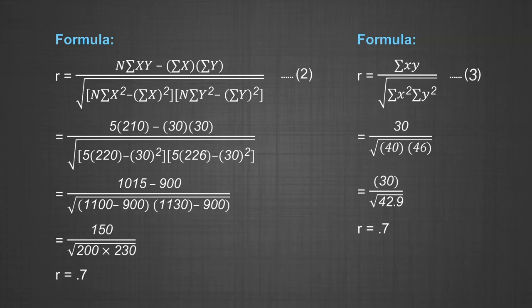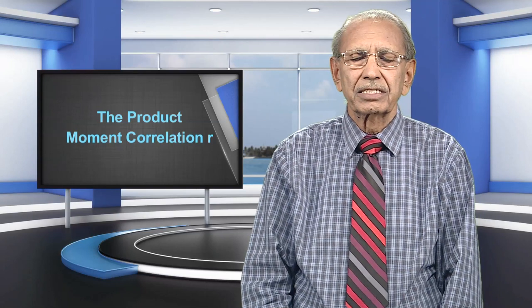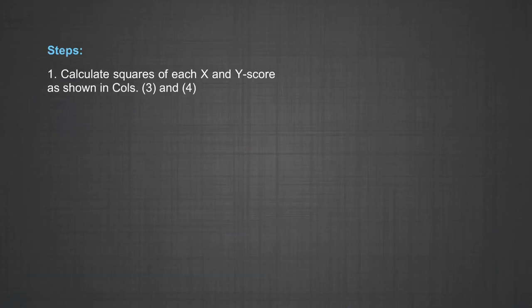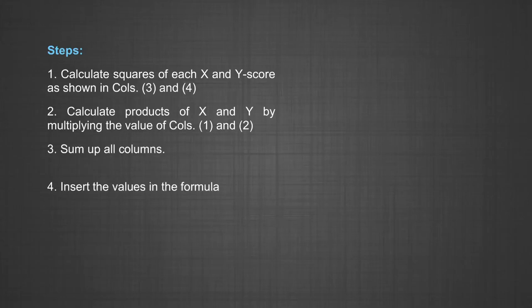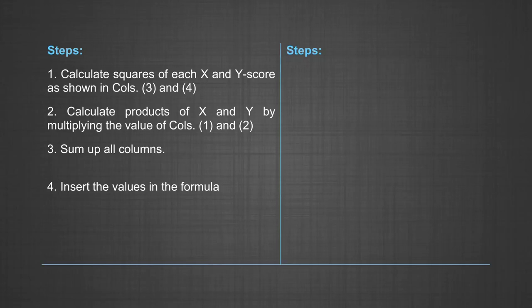We have shown the steps in the calculation of the coefficient of correlation by two different methods. Reviewing the steps for the raw score method: Step 1, calculate squares of each X and Y score as shown in columns 3 and 4. Step 2, calculate products of X and Y by multiplying the values in columns 1 and 2. Step 3, sum up all columns. Step 4, insert the values in the formula.